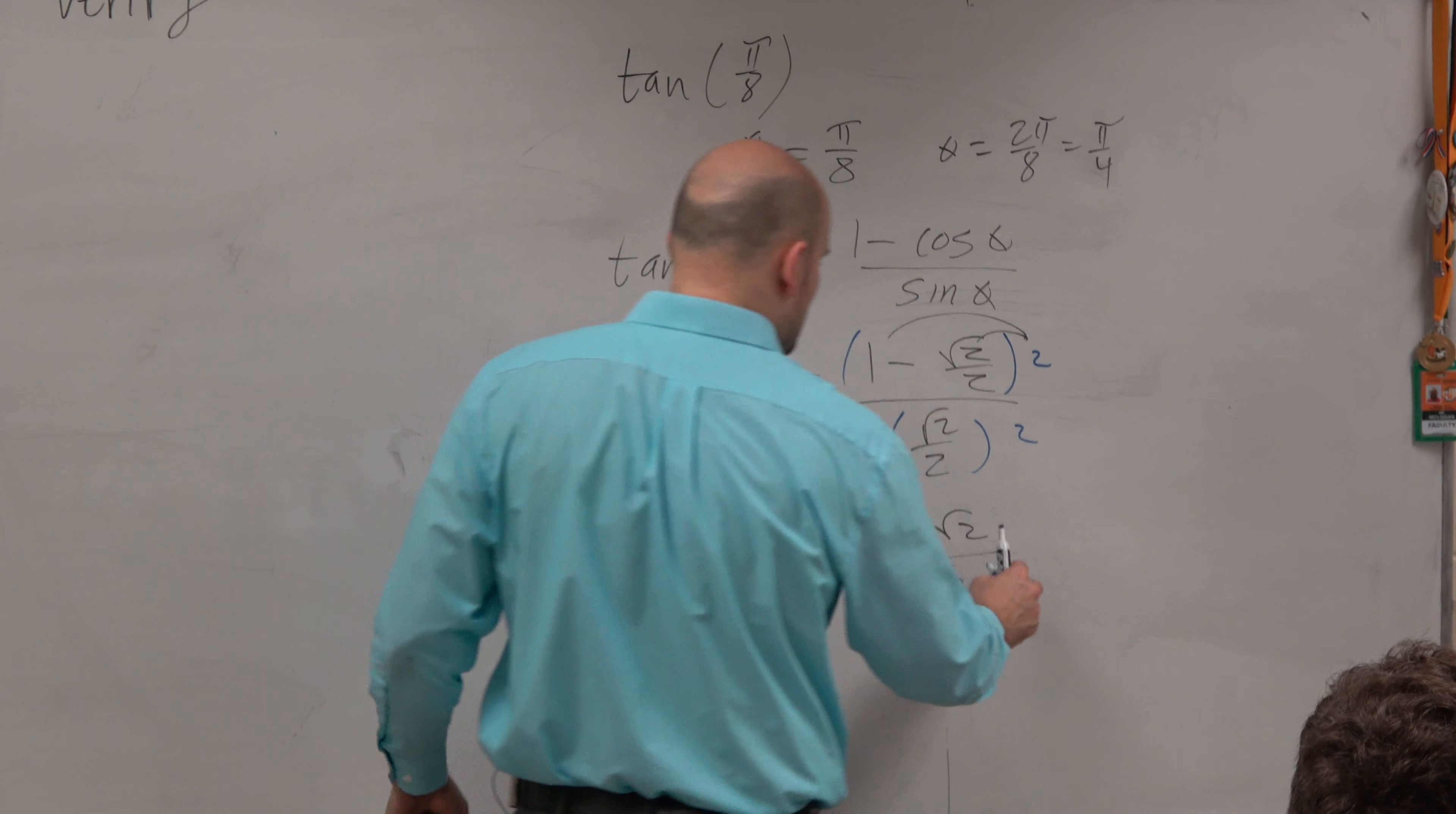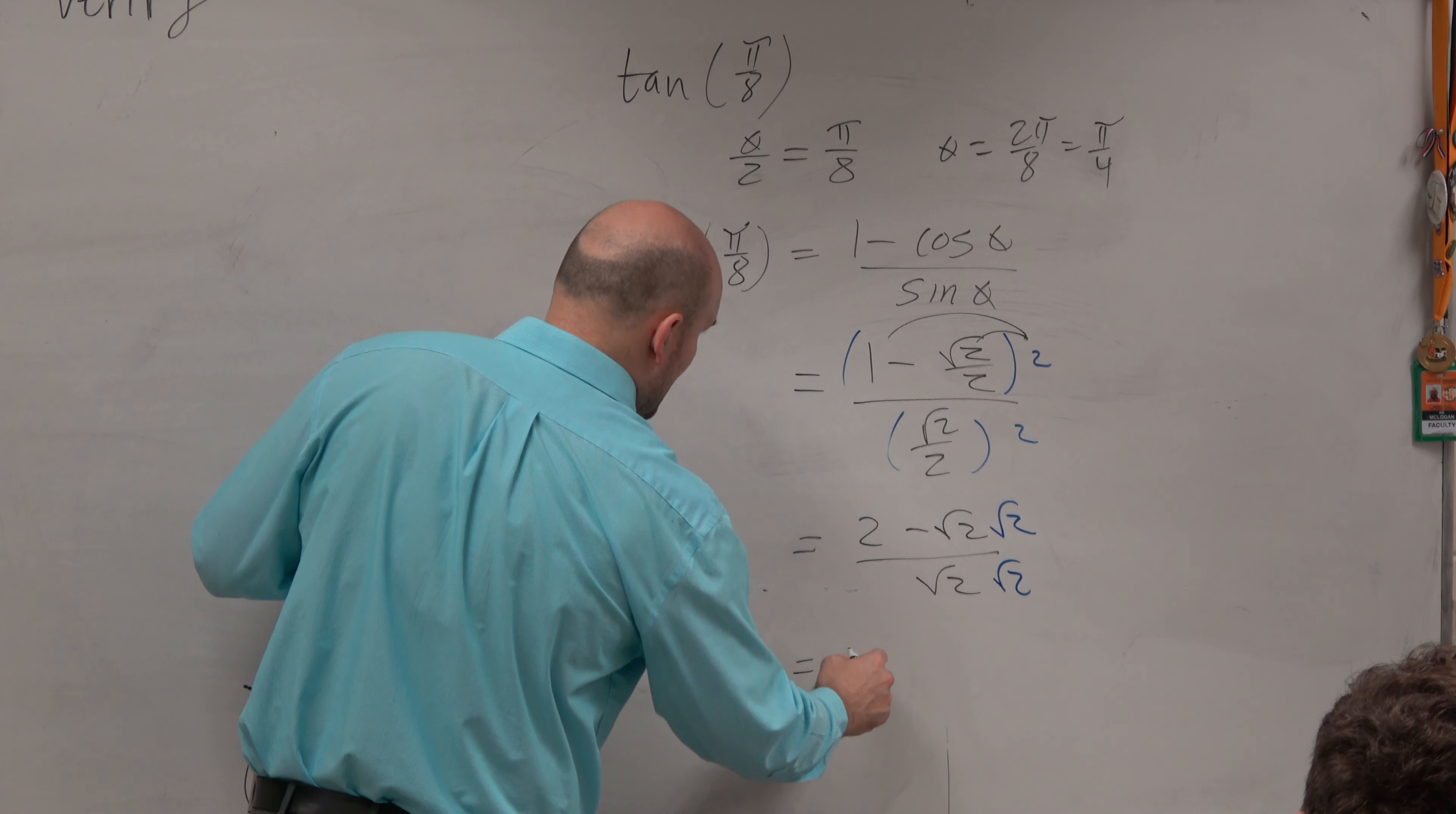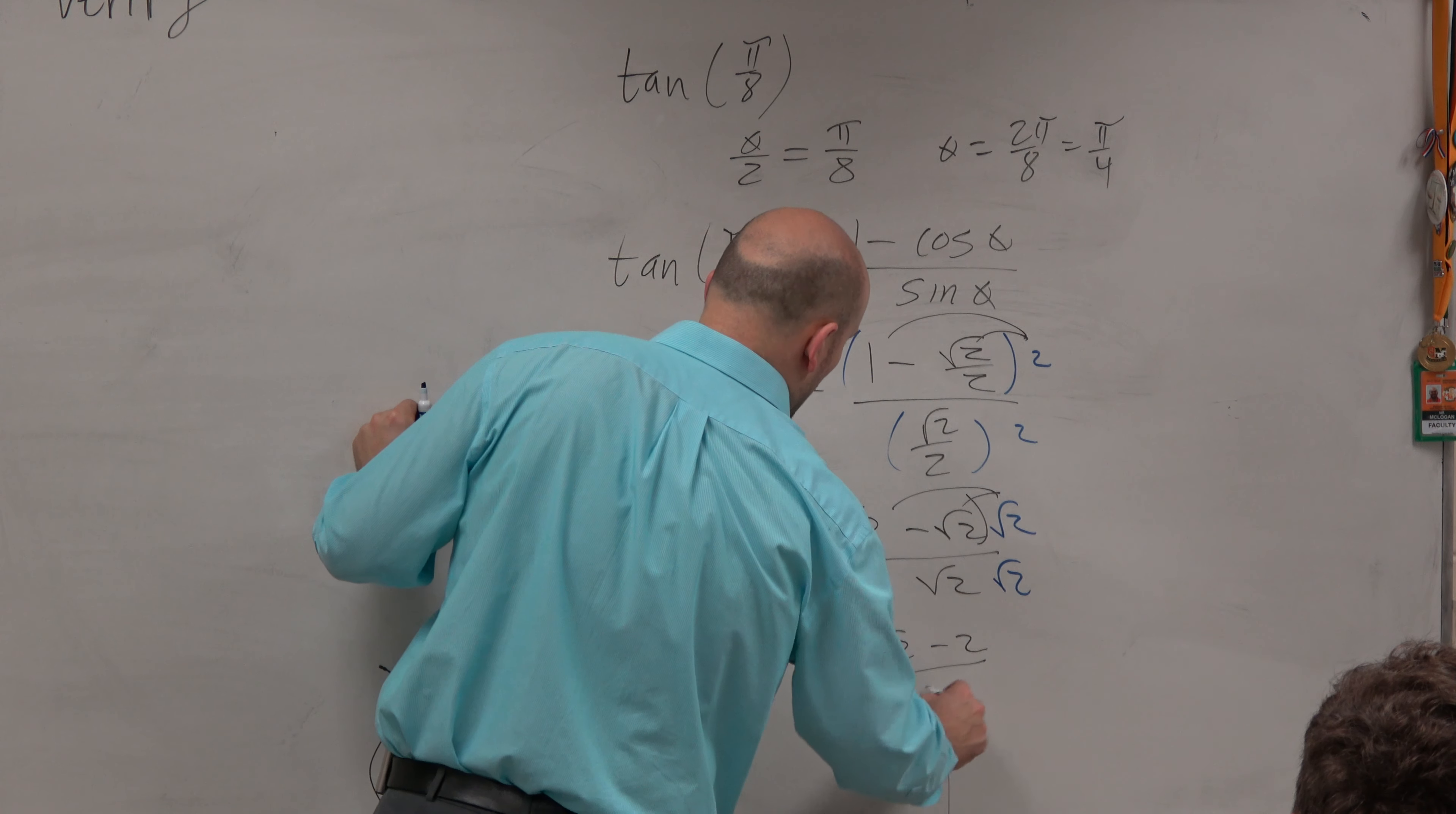Now I will go ahead and rationalize my denominator. And now I get, applying the distributive property, 2 square root of 2 minus 2 all over 2.